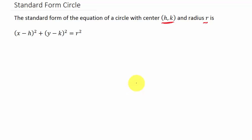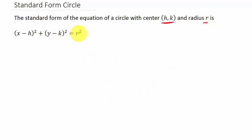Once you know the center and the radius, you just take the x-coordinate of the center and plug it in for h, the y-coordinate of the center and plug it in for k, and then r — we square that.